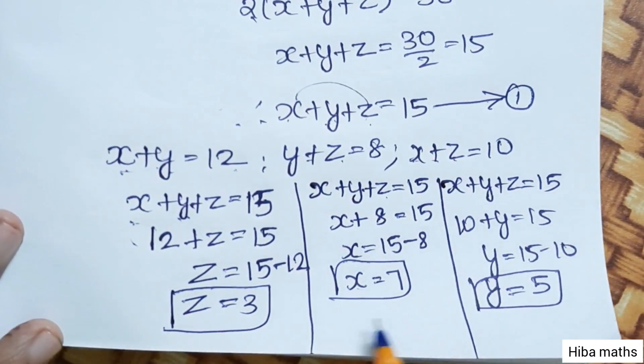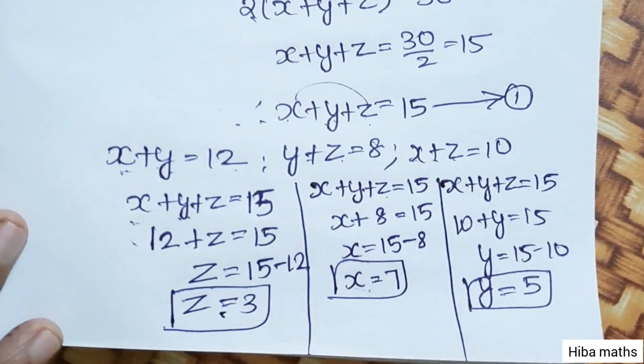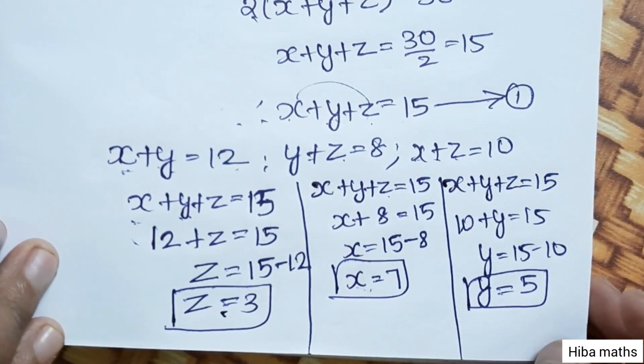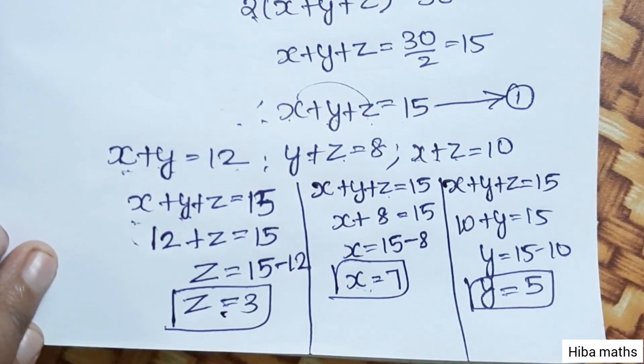7 plus 5 plus 3 equals 15. The answer is correct. Thank you so much for watching.